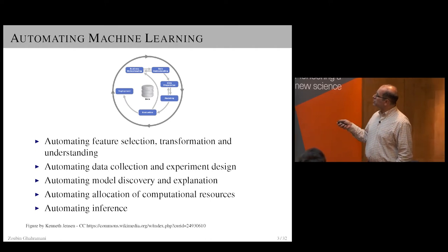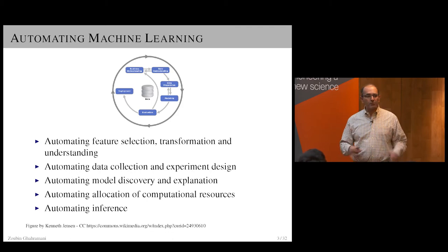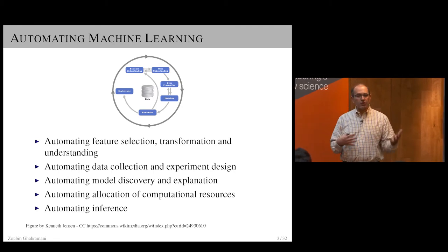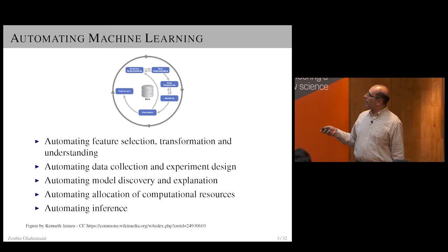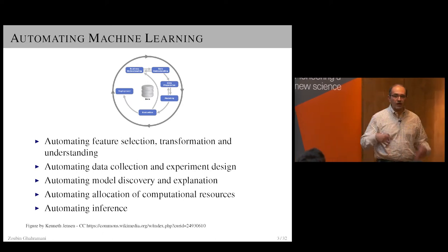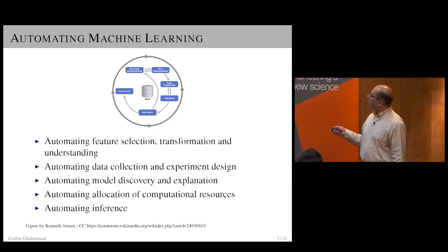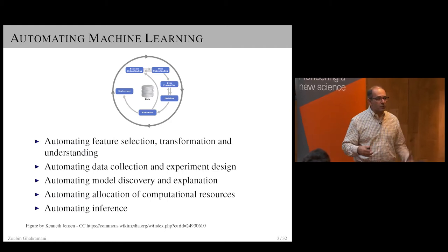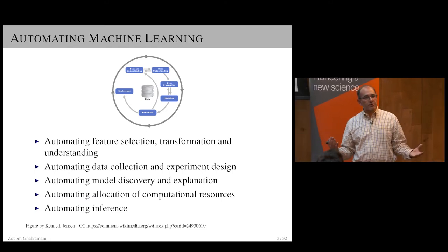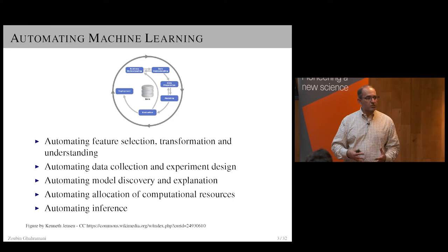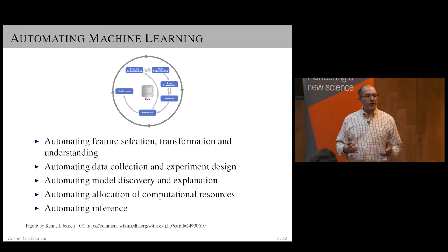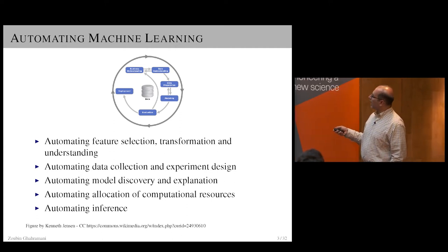Things like automating feature selection, transformation, and understanding — most of these are done manually today. Dealing with raw data and turning it into a usable form, the data collection process and experiment design — where did the data come from and how do we collect more? The thing I'm going to focus on quite a bit is model discovery and explanation: once you have the data, what model do you use to answer the questions you're interested in, and how do you explain what you've done to other people?